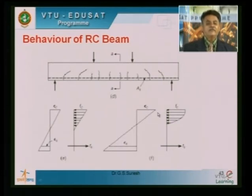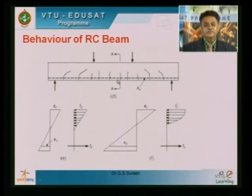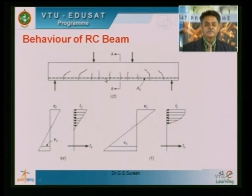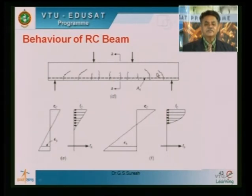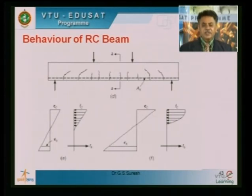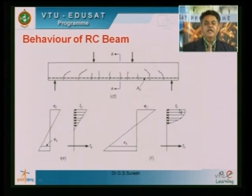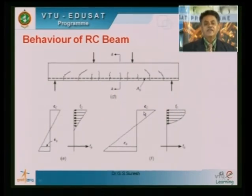As load increases, cracking starts appearing — initially below the reinforcement. At this stage the stress-strain curve is still linear, but on the tension side concrete carries no stress; all tension is taken by the steel. Further loading develops flexural cracks, and with more load cracks incline at about 45 degrees — these are shear cracks — propagating up to the neutral axis. At this stage the beam approaches its ultimate state and the stress-strain curve becomes almost parabolic, with stress F_cu and strain epsilon_cu.